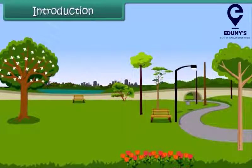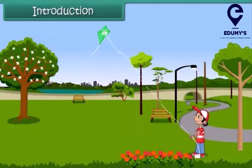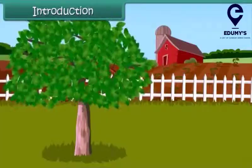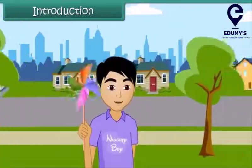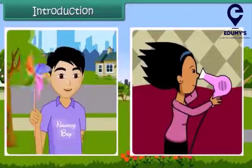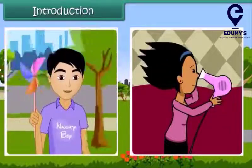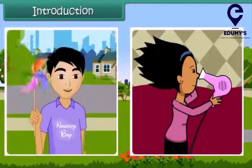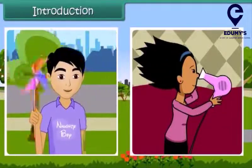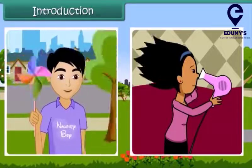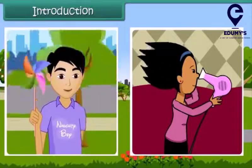Dear friends, do you have any idea as to how a kite flies? How do the leaves of a tree move? Or have you ever played with a paper windmill? How does this happen? Friends, this happens due to the movement of air. Air is present everywhere around us and we can feel it.